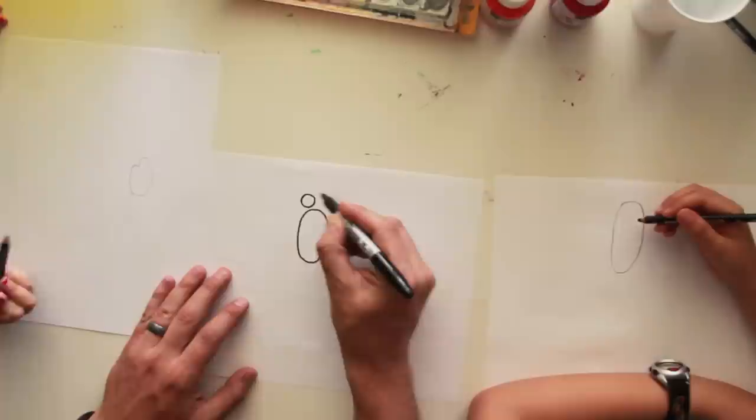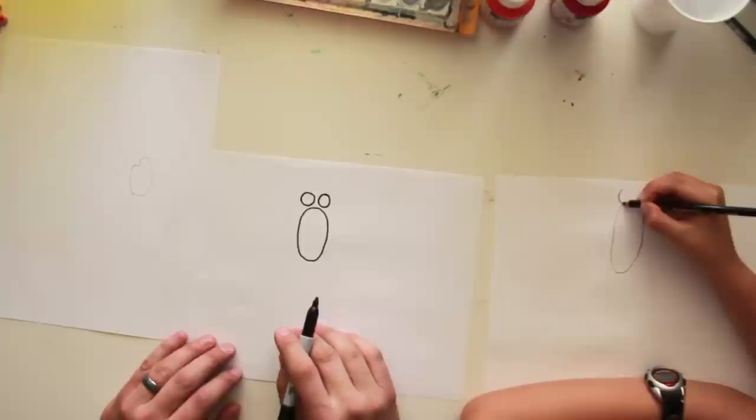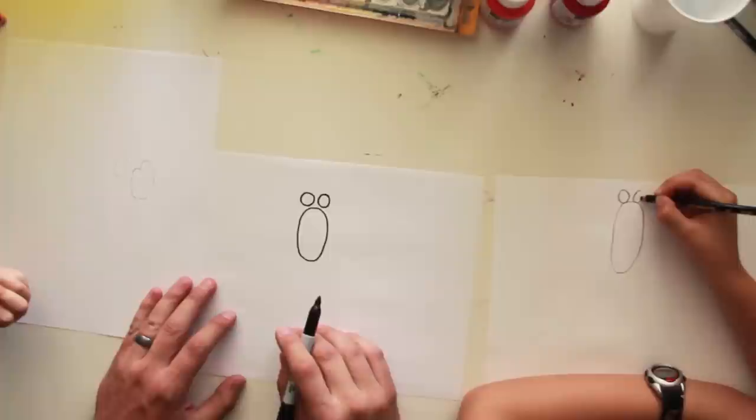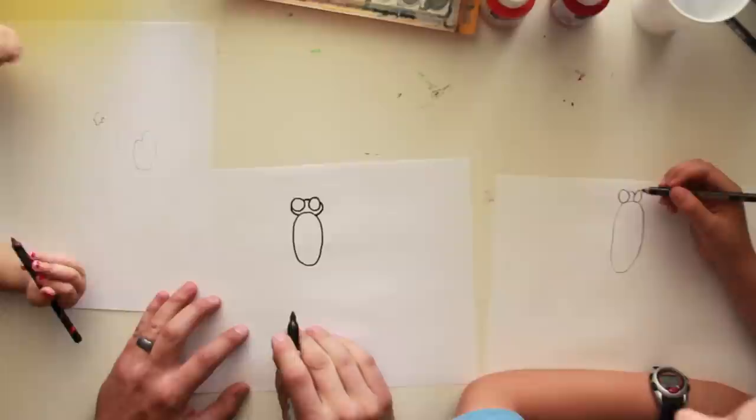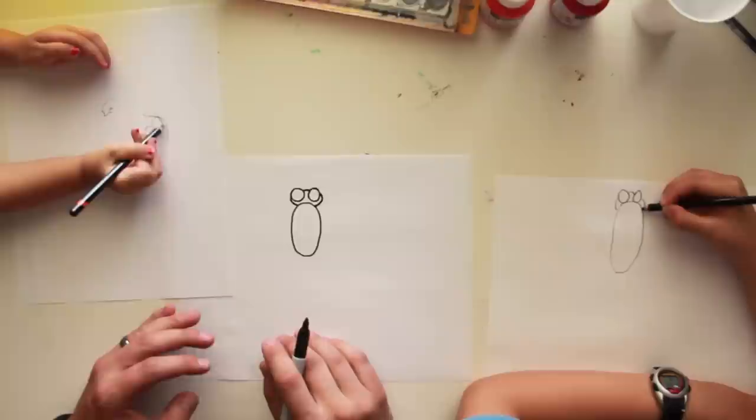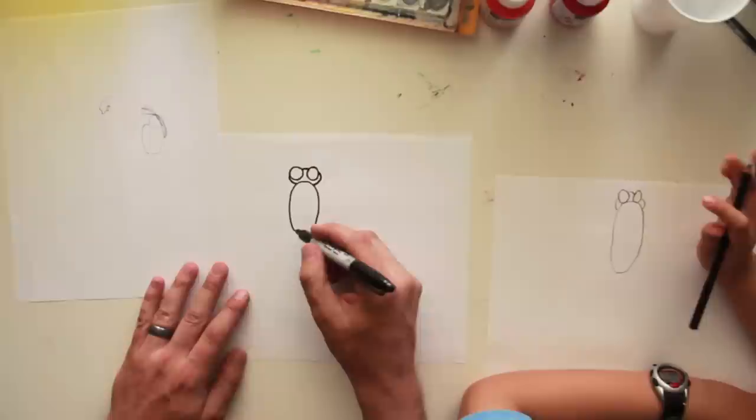Now the next thing we're going to draw are two circles right above the oval like this. And these are his eyes. Good job. Then I'm going to connect, I'm going to connect the two circles and make his head, kind of like that. Awesome, good job.